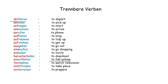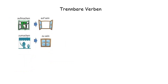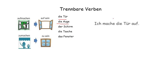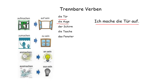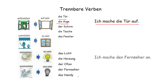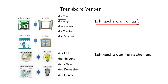Stattfinden — to take place. Vorbereiten — to prepare. The stem part conjugates and the prefix goes at the end. Aufmachen means 'to open' and zumachen means 'to close' — used for door, eye, bag, window, etc. 'Ich mache die Tür auf' — I open the door. Anmachen means 'to switch on' and ausmachen means 'to switch off' — mainly used for lights, TV, and devices. 'Ich mache den Fernseher an' — I switch on the TV.